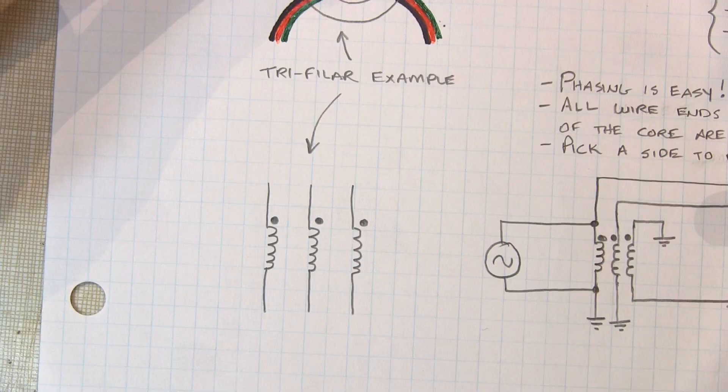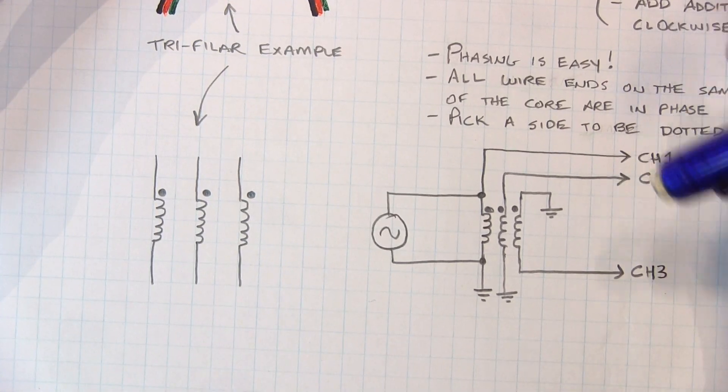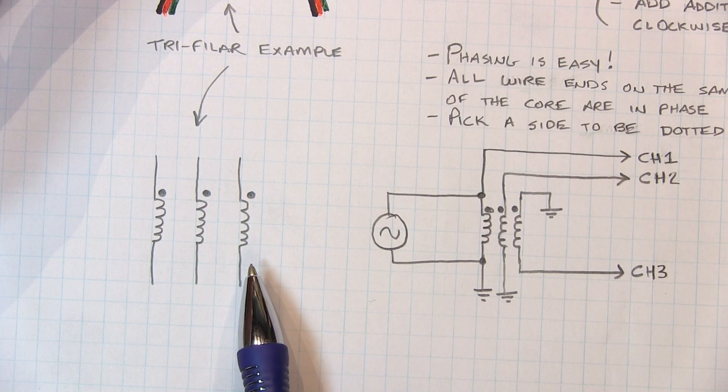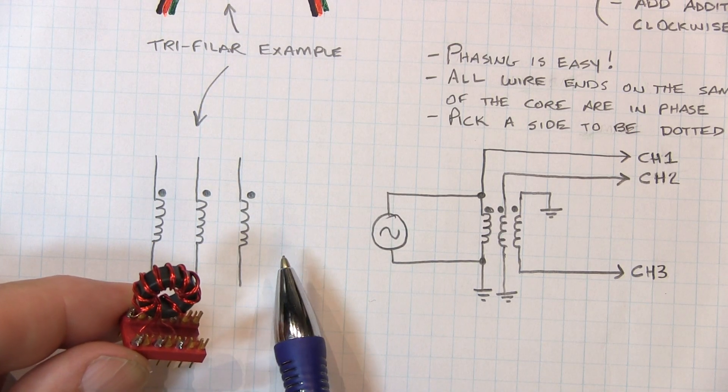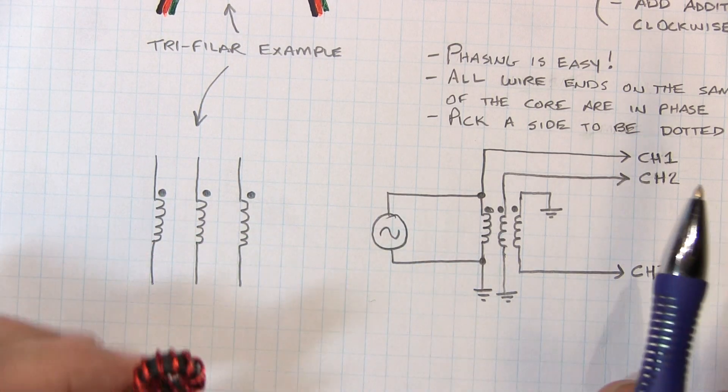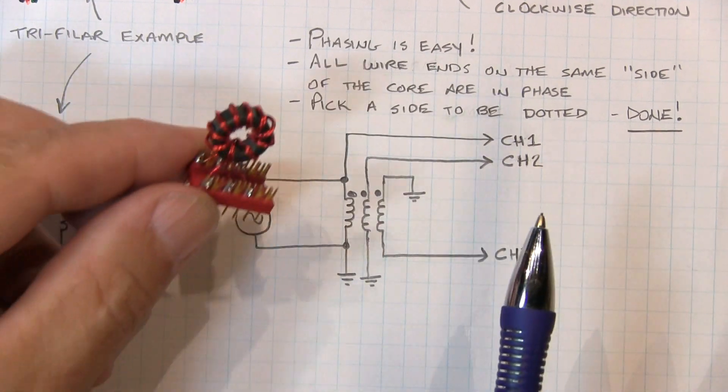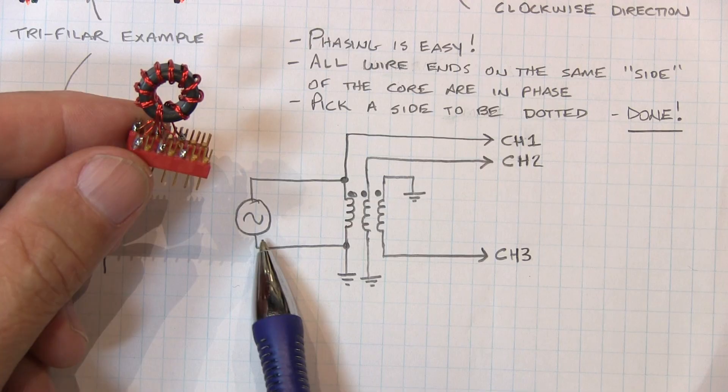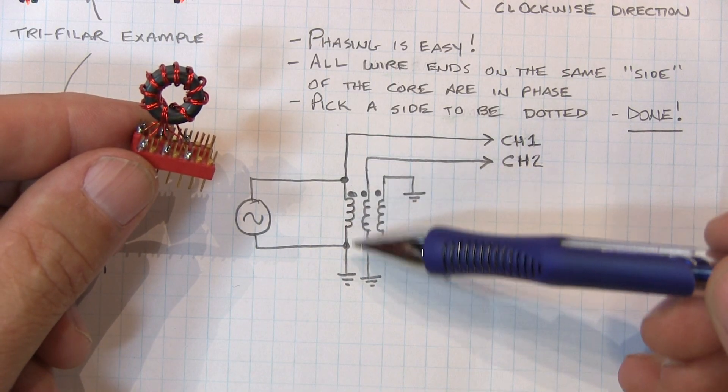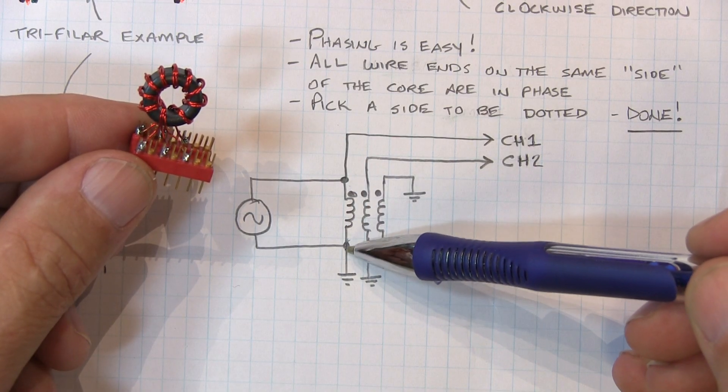That would look in a schematic maybe something like this. So let's actually go take a look at this transformer and see how the phasing dots wind up giving you the different phases. So what I'm going to do is put this transformer just in a breadboard here. I've got a signal generator that we're going to hook up to one of the windings, and one end grounded.